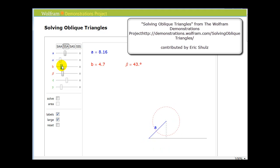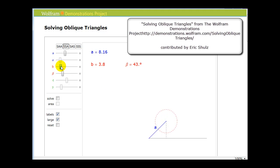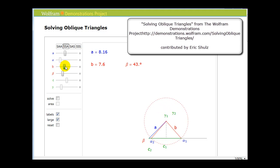If side B is too small — less than the height — we have no solutions, because we can't connect the three sides to form a triangle. And if the length of side B is too large but still less than side A, there are again two solutions; once it becomes larger than side A, there is only one possible triangle.